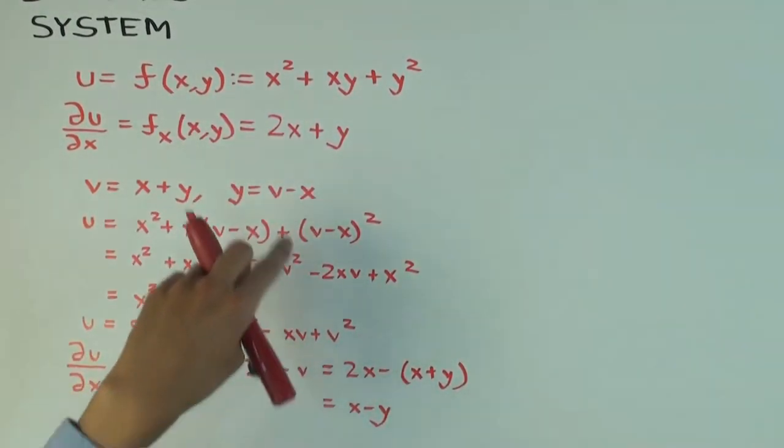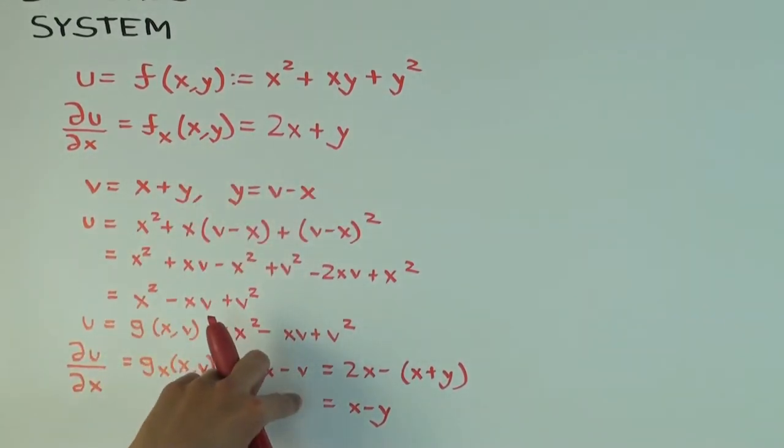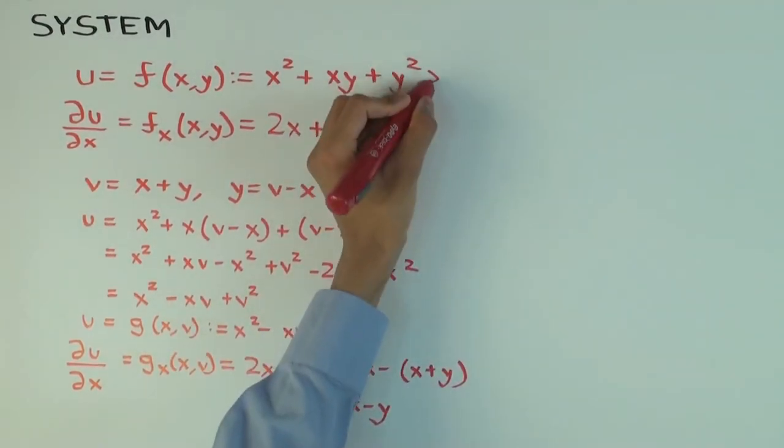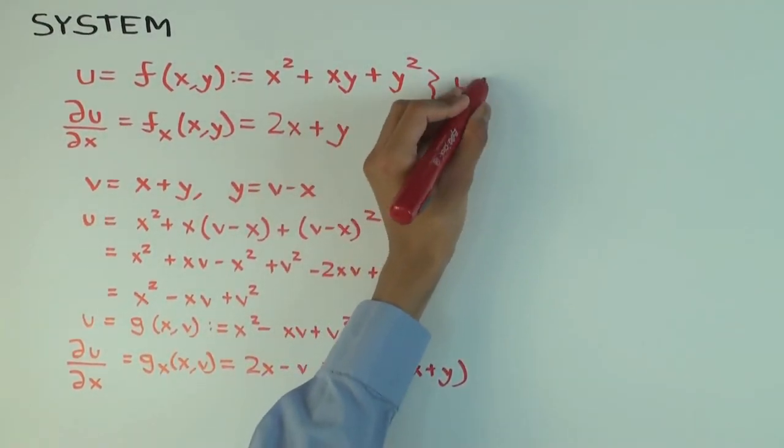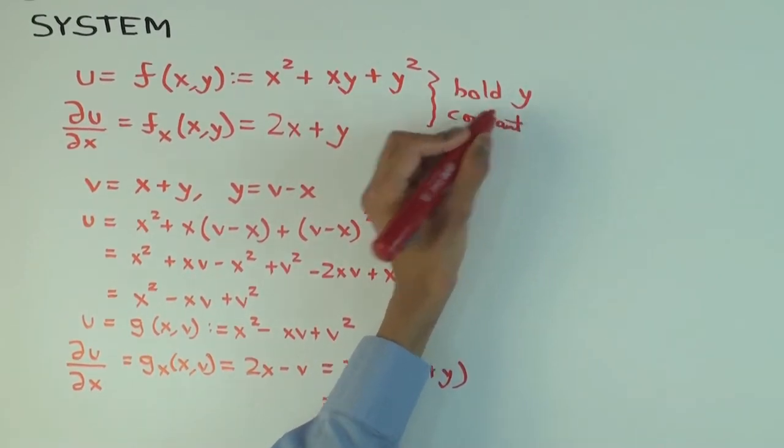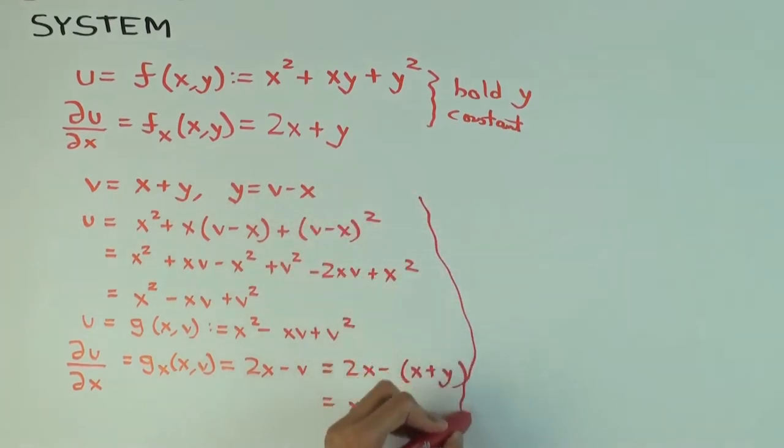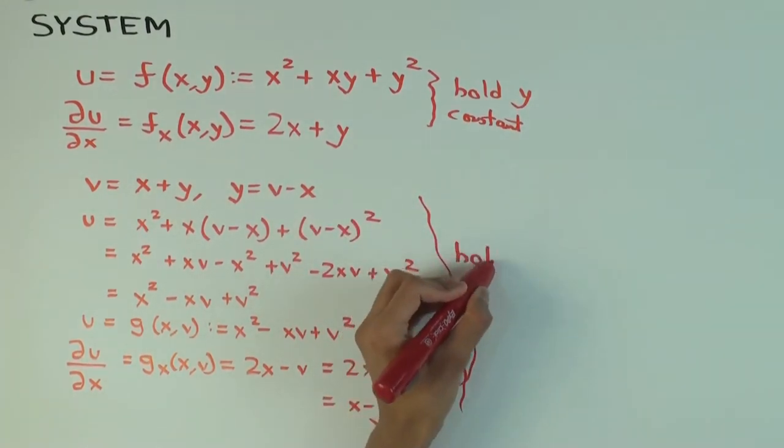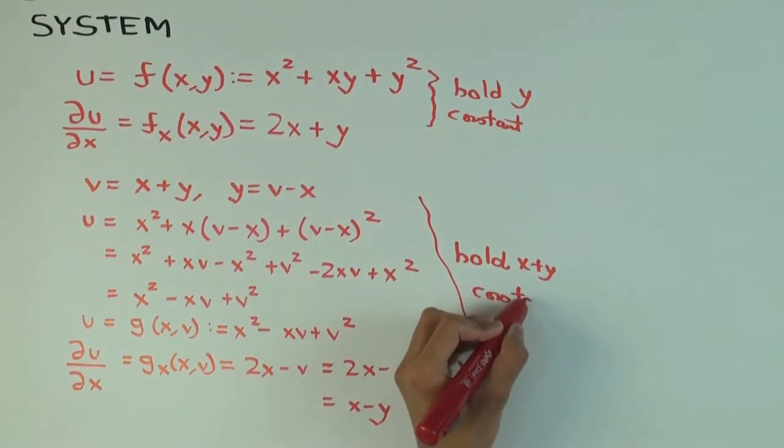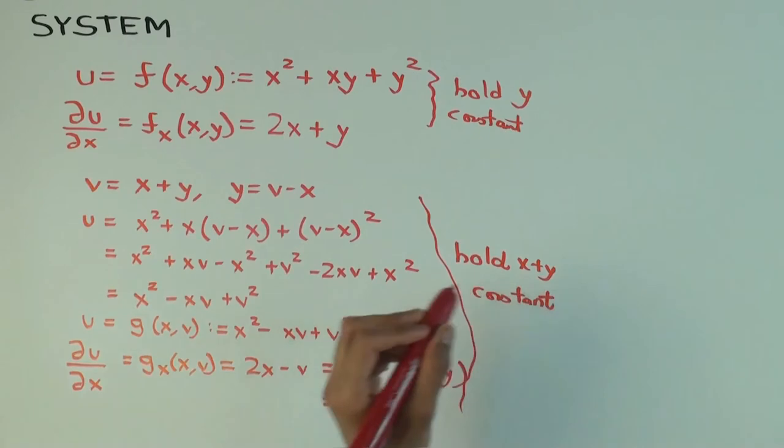So we made some calculation error. Did we? Did we make a calculation error? Or is it okay? So why are they not the same? Not holding the same thing constant. Yeah, exactly. That's the purpose of this video, right? So this is holding y constant, and this is holding x plus y constant.